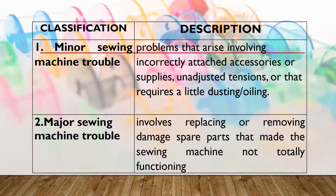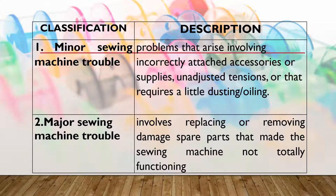There are two classifications of sewing machine trouble. The first one is the minor sewing machine trouble and the second one is the major sewing machine trouble. Minor sewing machine trouble includes problems that arise involving incorrectly attached accessories or supplies and adjusted tensions, or that requires a little dusting or oiling.